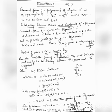So p(x) = 0 implies (x + 5)(x + 2) = 0, which gives x = -5 or x = -2. Therefore, -5 and -2 are the zeros of the given polynomial x² + 7x + 10.